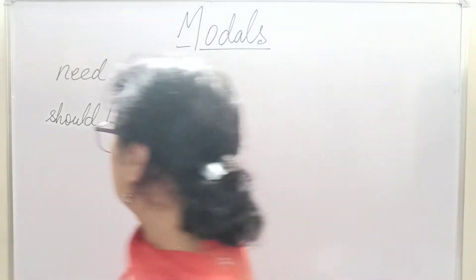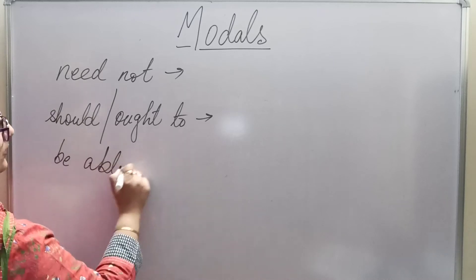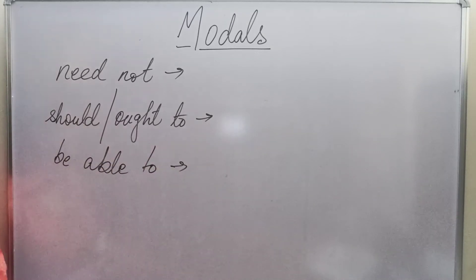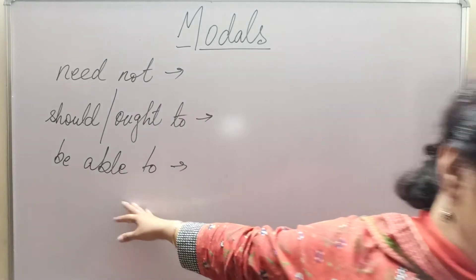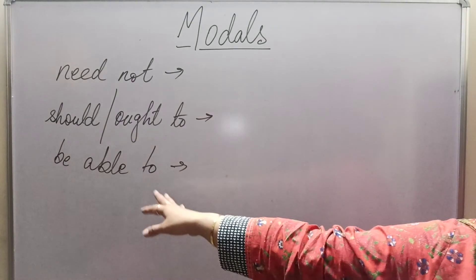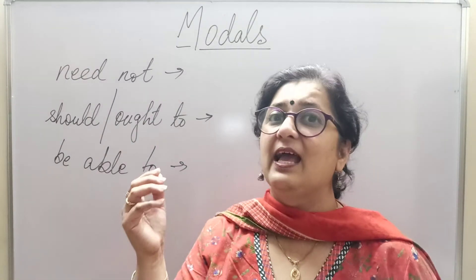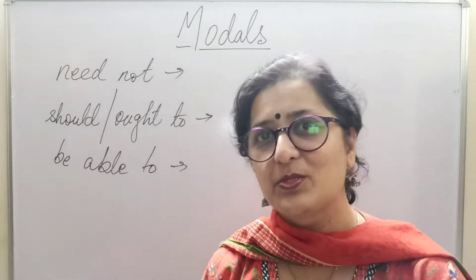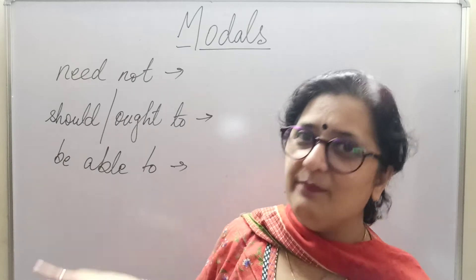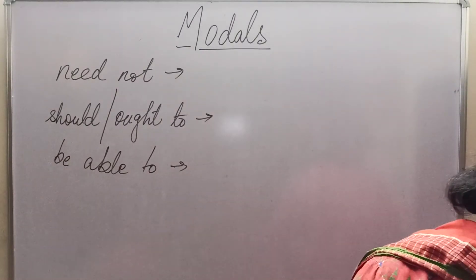Let's try another modal: 'be able to.' Very simple — 'You should be able to do this.' Here we are using both 'should' and 'be able to' together. For example: 'My father can lift heavy things — he will be able to lift heavy things as he's a strong man.' So he's drawing a conclusion: since he's a strong man, he will be able to lift heavy things. So 'be able to' is yet another modal we picked up.